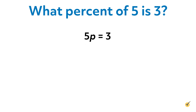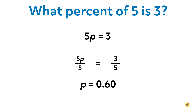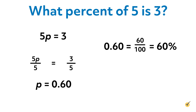From here, solve the equation for p. To solve for p, isolate the variable by doing inverse operations. The opposite of multiplying by 5 is dividing by 5, so divide both sides by 5. 5 divided by 5 equals 1, so write p on the left side. 3 divided by 5 equals 0.60, so p equals 0.60. Now convert the decimal into a percentage: 0.60 equals 60 over 100, or 60%. Therefore, 3 is 60% of 5.